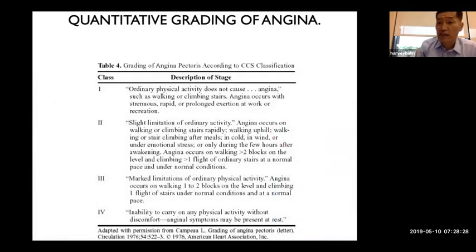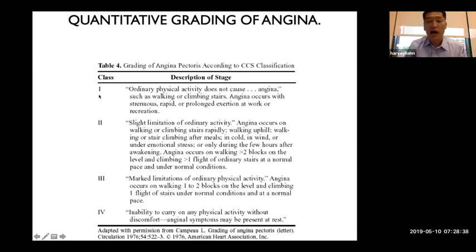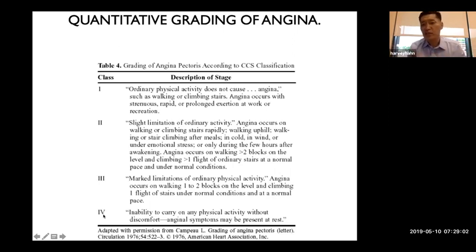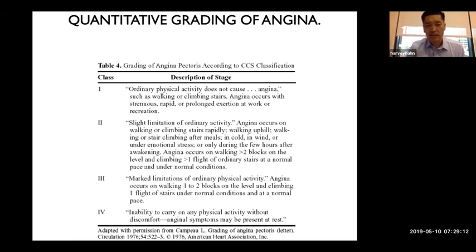Angina can be graded using the Canadian Classification Score. Class I is no chest pain with normal activity. Class II is chest pain with more than two blocks or one flight of stairs. Class III is pain with less than one flight or two blocks. Class IV is chest pain with minimal daily activities like walking around the house or carrying groceries.